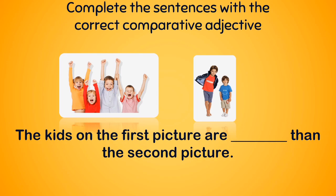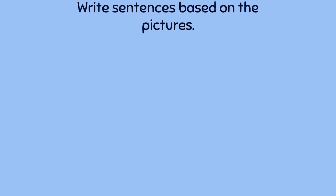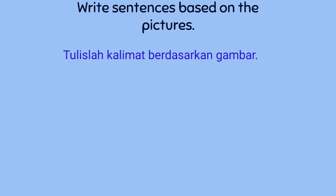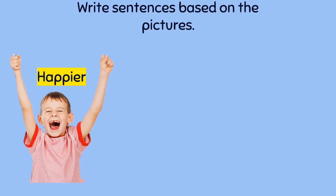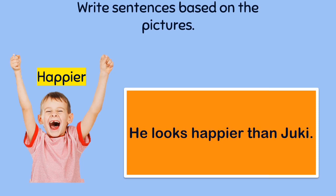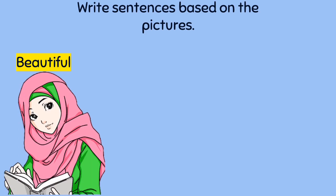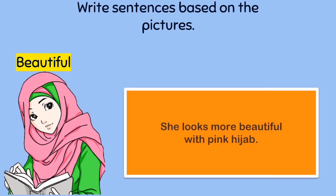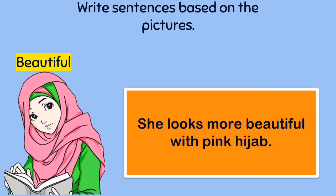Write sentences based on the pictures. The kids in the first picture are happier than in the second picture. He looks happier than Juki. Beautiful — more beautiful. She looks more beautiful with pink hijab.